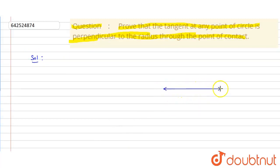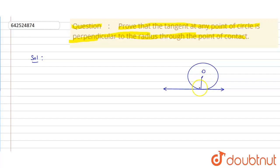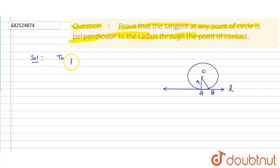First, let us draw a tangent line and a circle. Let this be center O. We join this point to another point. Let this point be A, this point be B, and this line be L. So we have a circle with center O and radius r, and tangent L. Now we need to prove that OA is perpendicular to L.